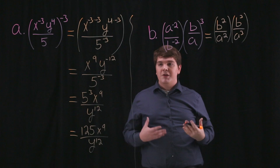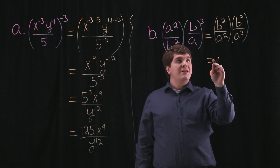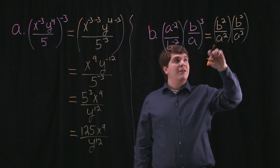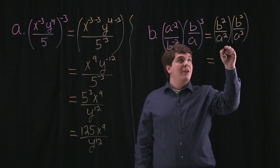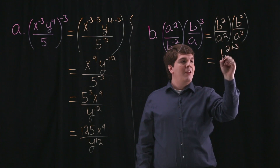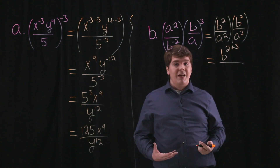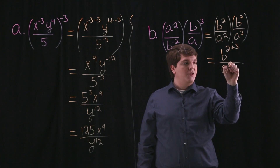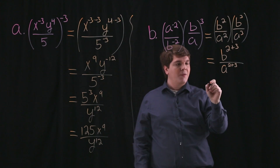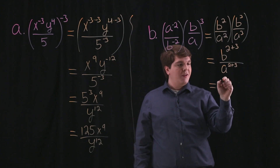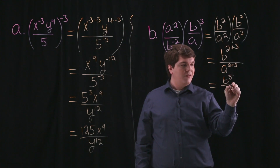From here all we need to do is multiply two fractions. In our numerator we have b squared times b cubed, which is b to the 2 plus 3, and in the denominator we have a squared times a cubed, which is a to the 2 plus 3. This simplifies down to b to the 5th divided by a to the 5th.